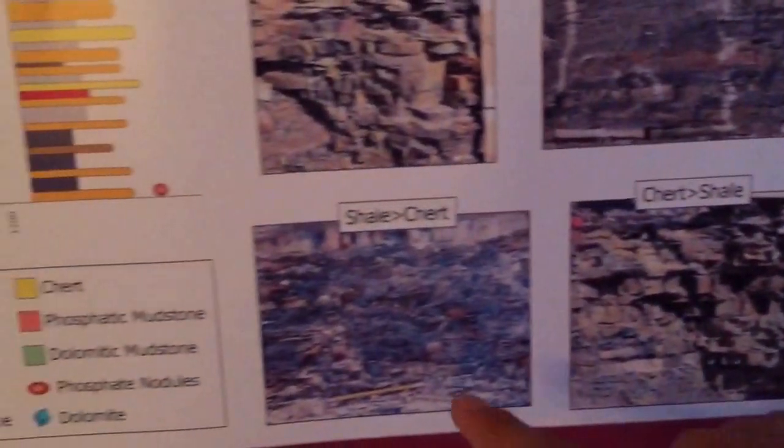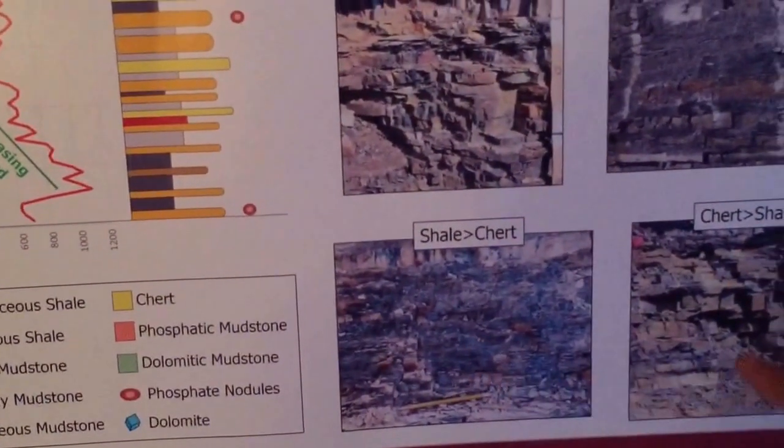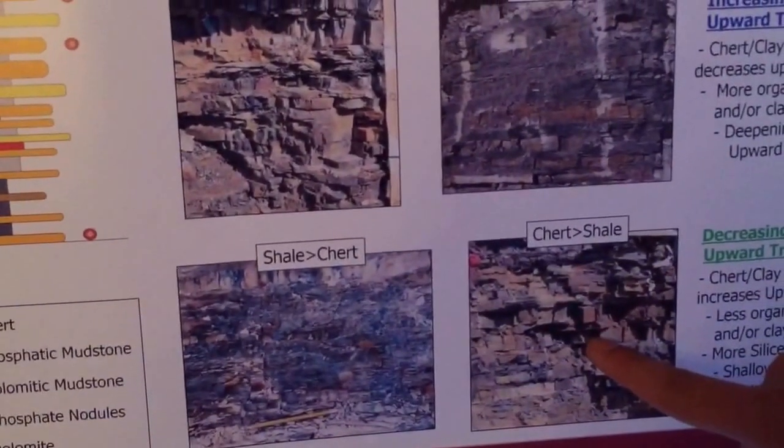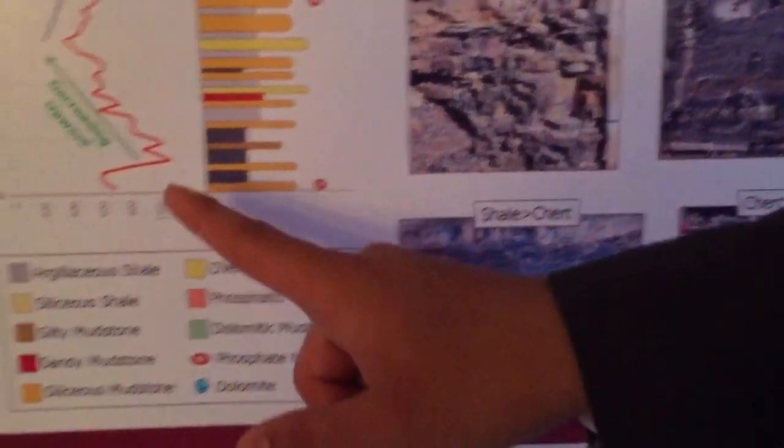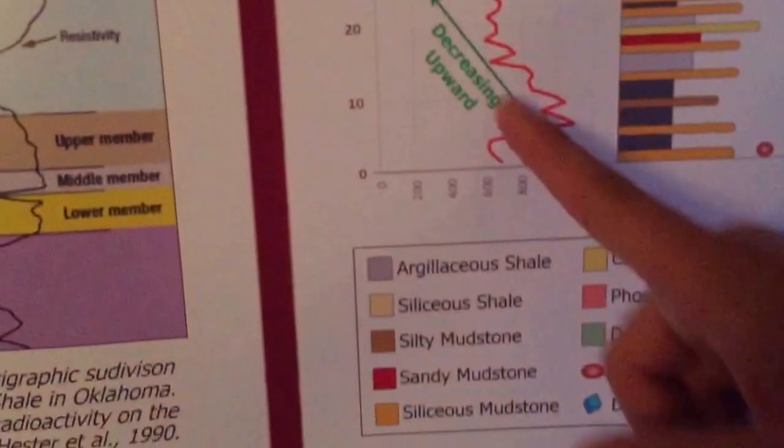In the increasing upward pattern, we recognize that at the bottom it's more shale and at the top it's more cherty. It means that the chert-shale ratio increases upward, but the gamma ray decreases upward.